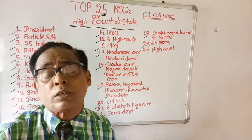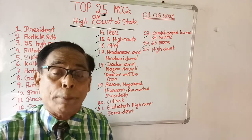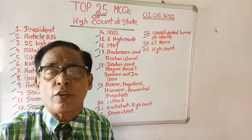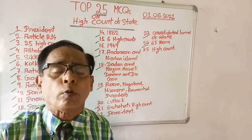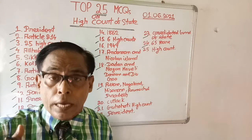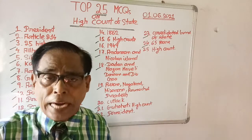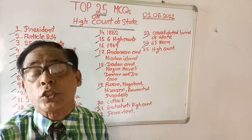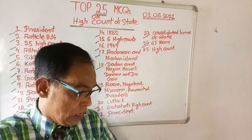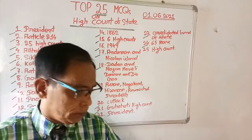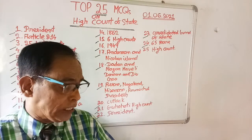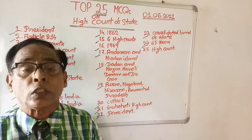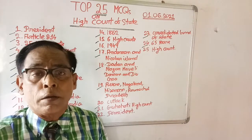Question number twenty-two: who appoints the acting Chief Justice of the High Court? For example, if the Chief Justice is ill and incapable of carrying on duties, an acting Chief Justice must be appointed. Options are: Prime Minister, Governor, President, and Chief Minister. The right answer is President — the President appoints the acting Chief Justice of the High Court.